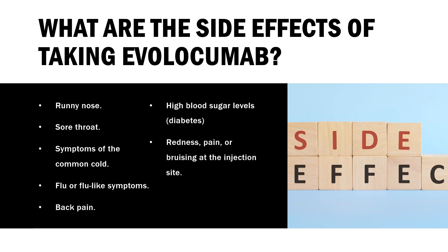Mechanism of action: Evolocumab is a human IgG monoclonal antibody which targets PCSK9 — proprotein convertase subtilisin/kexin type 9. PCSK9 is a serine protease produced by the liver which binds LDL receptors and creates a complex to be targeted for lysosomal degradation.